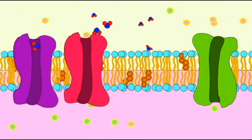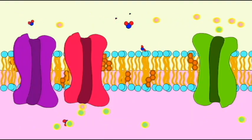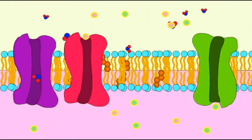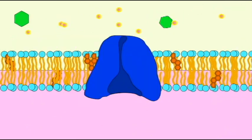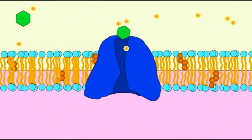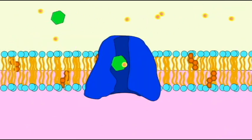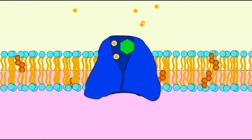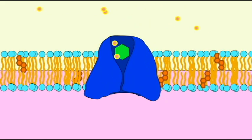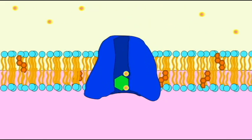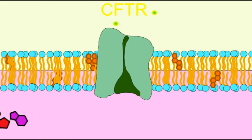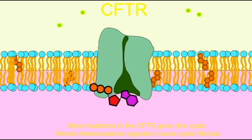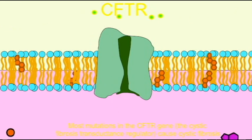Proteins have diverse roles in transporting substances across the cell membrane, serving both as protein channels allowing for diffusion, and also as active transport pumps which actively pump substances against their concentration gradients.